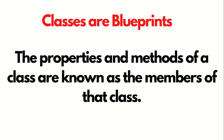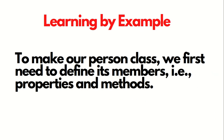The properties and methods of the class are known as members of that class. So this is the third terminology. First, we talked about what is a class. Then we talked about what is an object. Now we are talking about members. So what are members? The properties and methods of a class are known as members of that class.